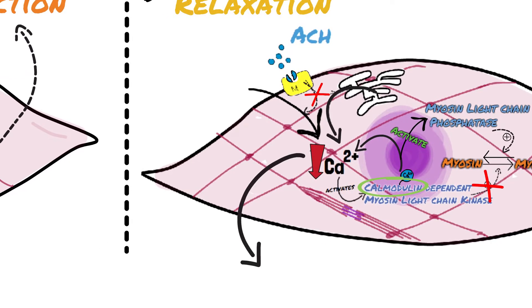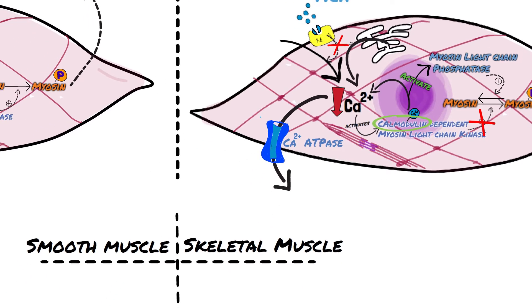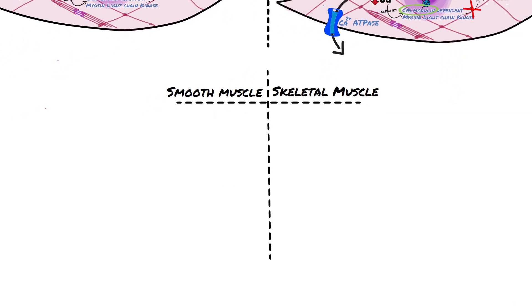For this relaxation, calcium ions must be removed by intracellular fluids. This is done by calcium pumps that pump calcium ions out of the smooth muscle fibers back into the extracellular fluid.